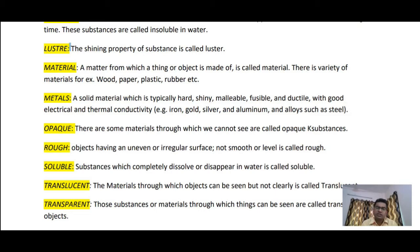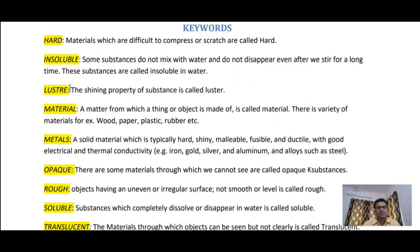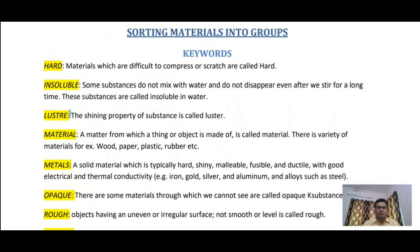Next are 'translucent' and 'transparent'. Translucent objects are those through which we can see but not clearly — for example, a sheet of paper with oil on it is translucent. Transparent objects are those through which things can be seen clearly. Materials through which things can be seen are called transparent objects. Please revise these keywords repeatedly.